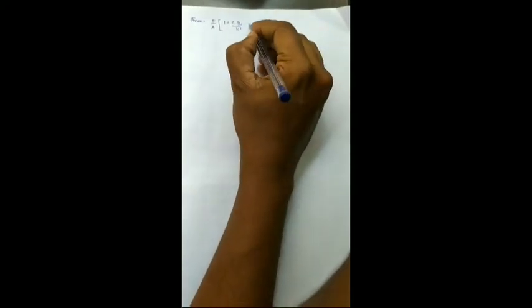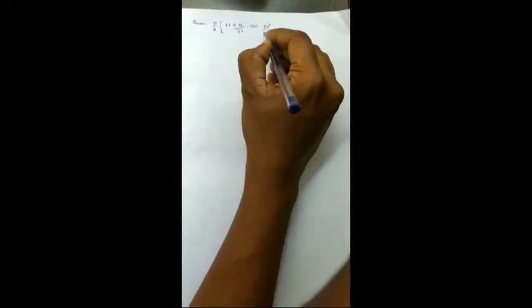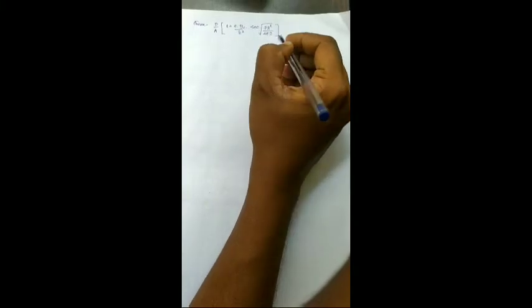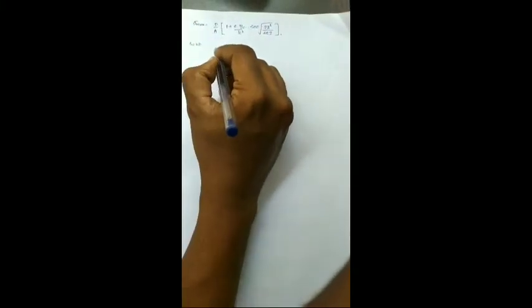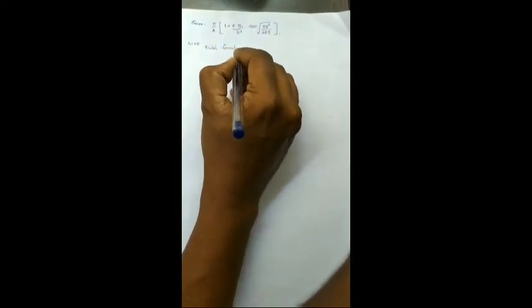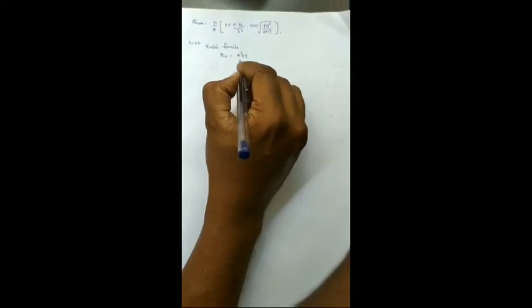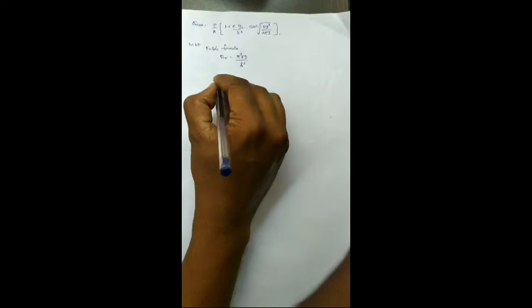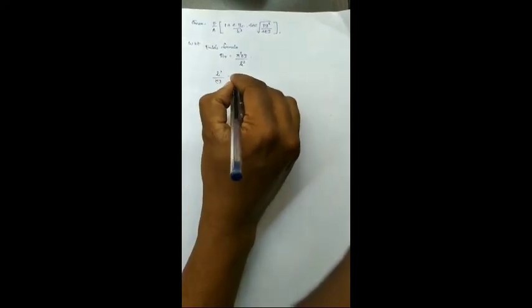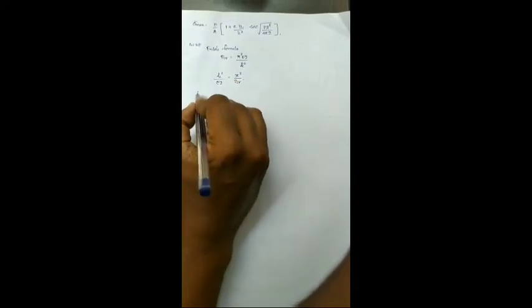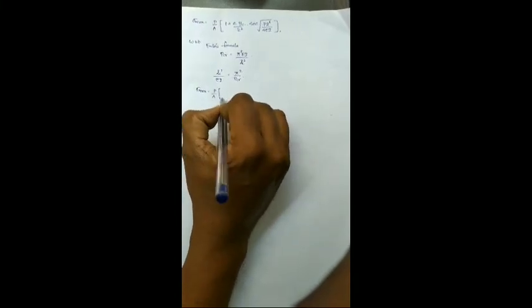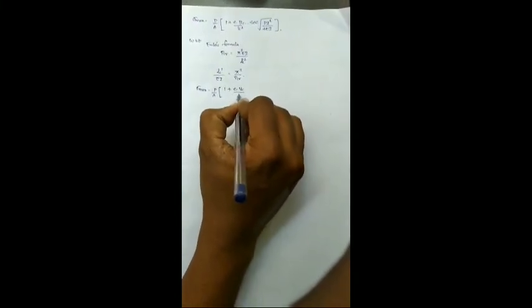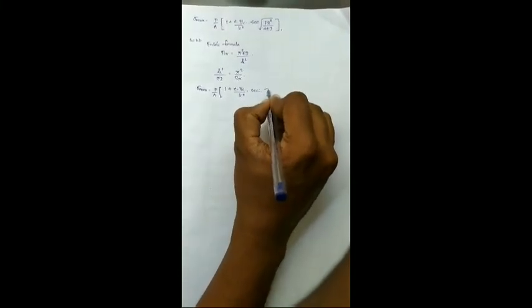So it is written as sigma max is equal to P by A into 1 plus e into YC by K square secant PL square by 4EI. We know from Euler's formula P critical is equal to pi square EI by L E square. From this you find LE square by EI is equal to pi square by P critical.